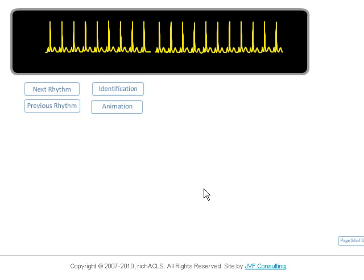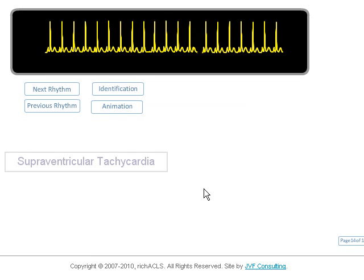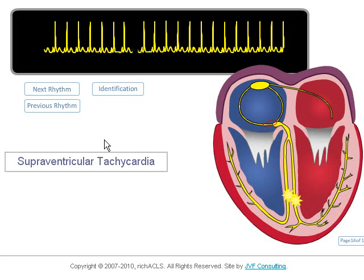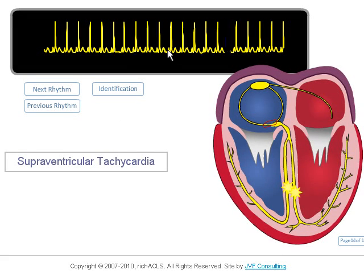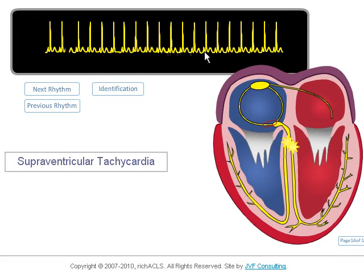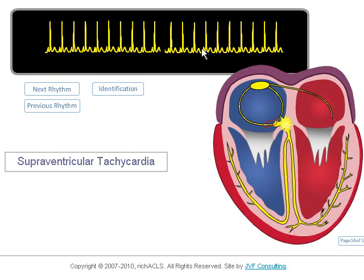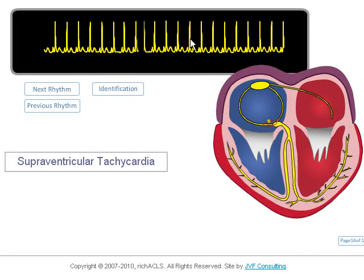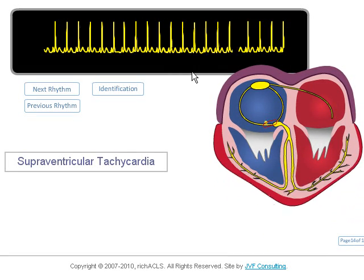In this first rhythm, supraventricular tachycardia, we have a fast, regular rhythm with a P wave in front of every QRS. The PR interval is constant with normal width, although hard to see with the fast rate. The QRS is narrow, and the rate is about 180.